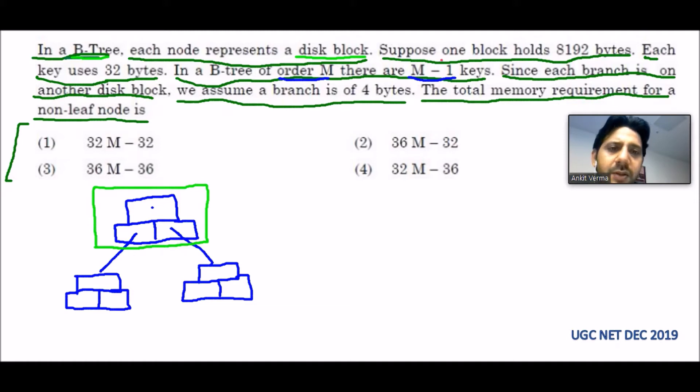They are saying suppose one block holds 8192 bytes. That means this one block will be having 8192 bytes, and byte is represented by capital B.